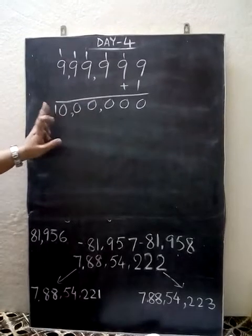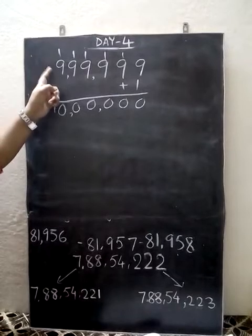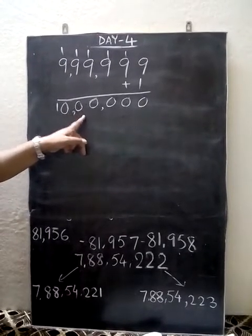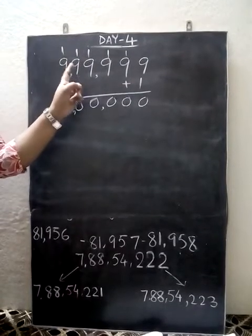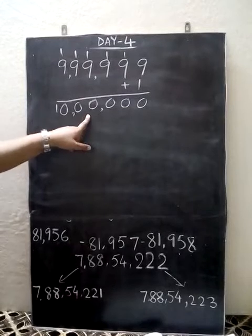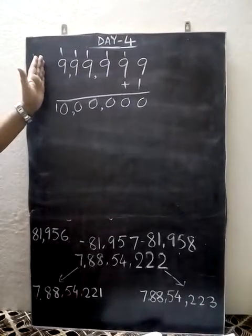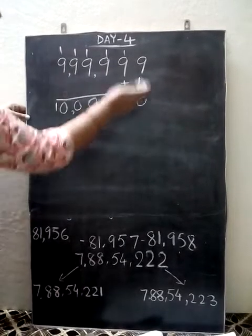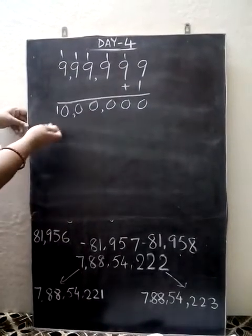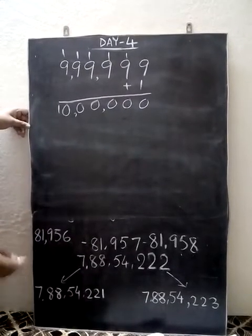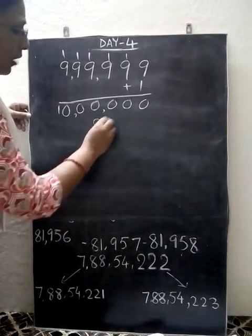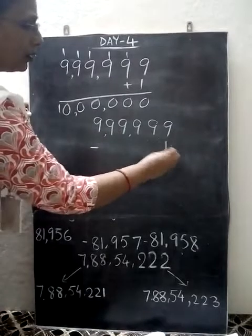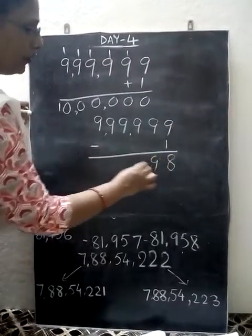So the successor of the greatest 6-digit number is the smallest 7-digit number. You must remember from our Day 2 class that when we add 1 to the greatest number, we get the next smallest number. Now how are we going to find its predecessor? It will be minus 1, so it is 8. All the 9s will be copied down. So that is the predecessor of this number.